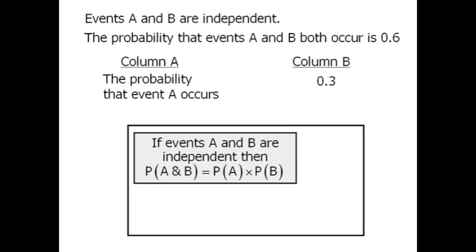So here we are told that the probability of A and B occurring is equal to 0.6. So we'll plug this into our formula.